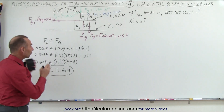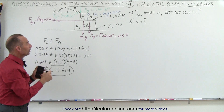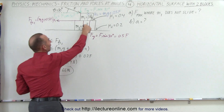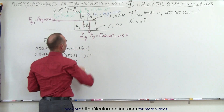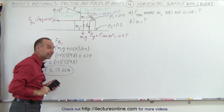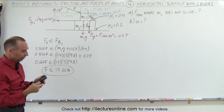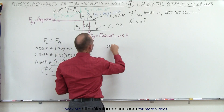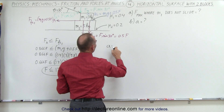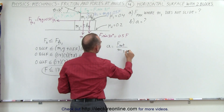Now assuming that 17.66 N is the force acting on both blocks together — because we know the friction force between them is sufficient to hold them together if the force is this value or less — what will be the acceleration of the total system? The acceleration equals the net force divided by the total mass.